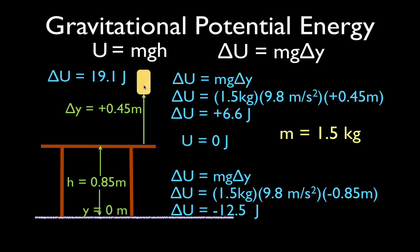So that is how you calculate the change in the potential energy of an object. It's delta U equals MG delta Y. You just have to be a little careful about what the delta Y is. Thank you very much for watching. I hope you found that helpful. If you did, you can give me a nice comment in the comment section below, or even a thumbs up. We will see you in the next video.